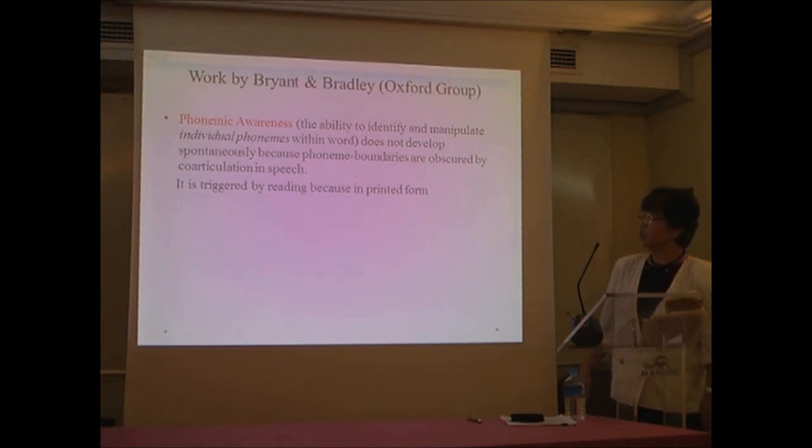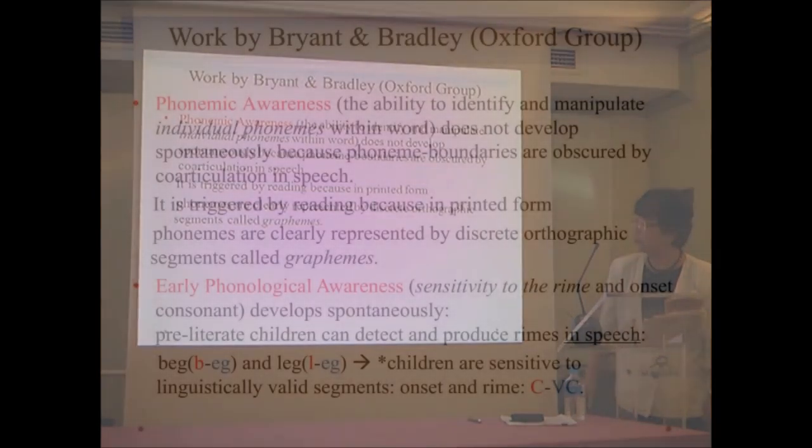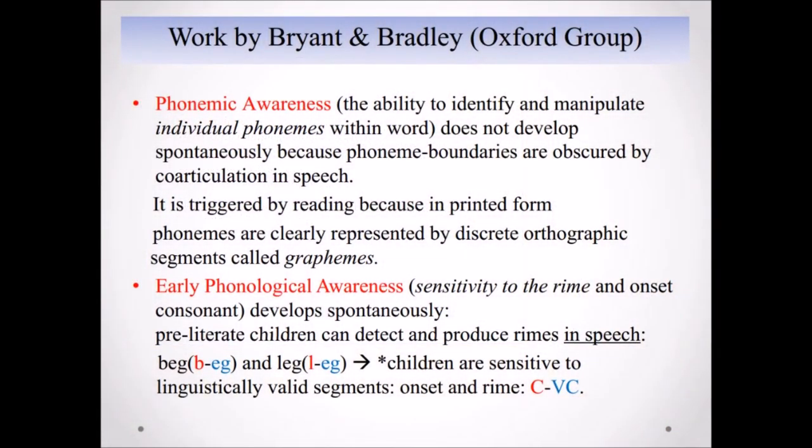It is triggered by reading, because in printed form, it was all presented in Roman alphabetic form, is clearly represented by A, B, C, D, discrete orthographic segments called graphemes. Only phonological awareness, which is a sensitivity to the rhyme and onset consonant, develops spontaneously in speech. Preschool children can detect and produce rhymes in speech. And this was shown by many studies on children. So, beg and leg, children can tell beg and leg have something in common, which is 'eg,' this is rhyme.